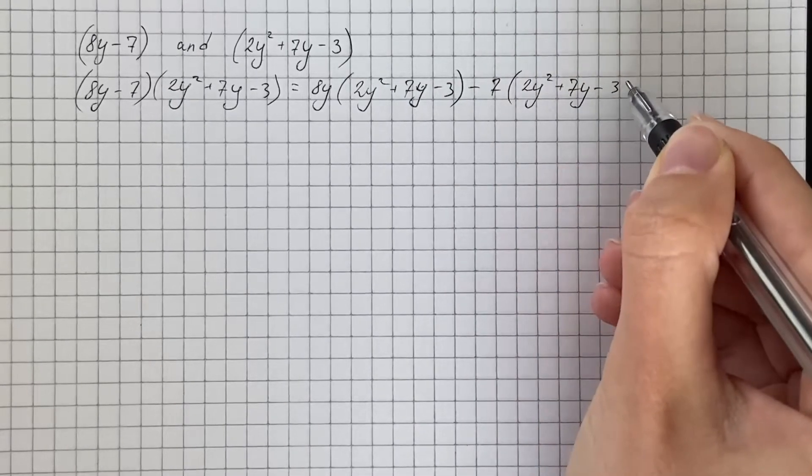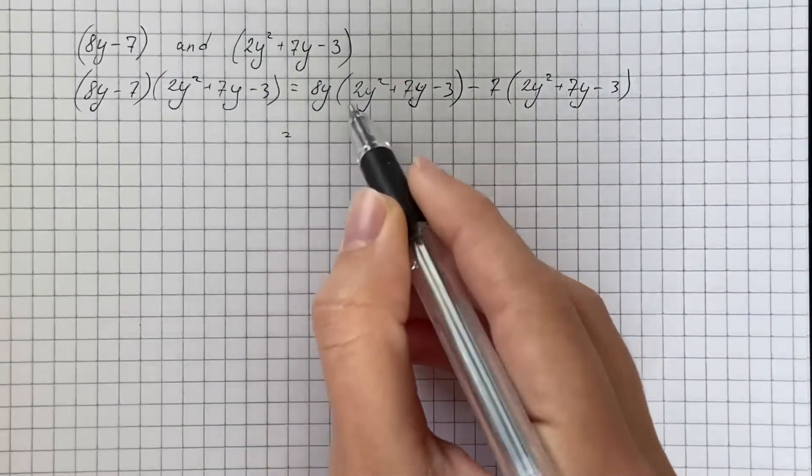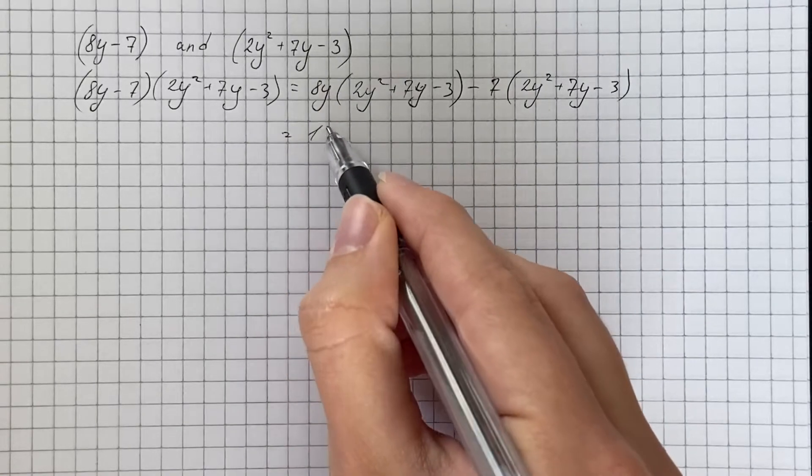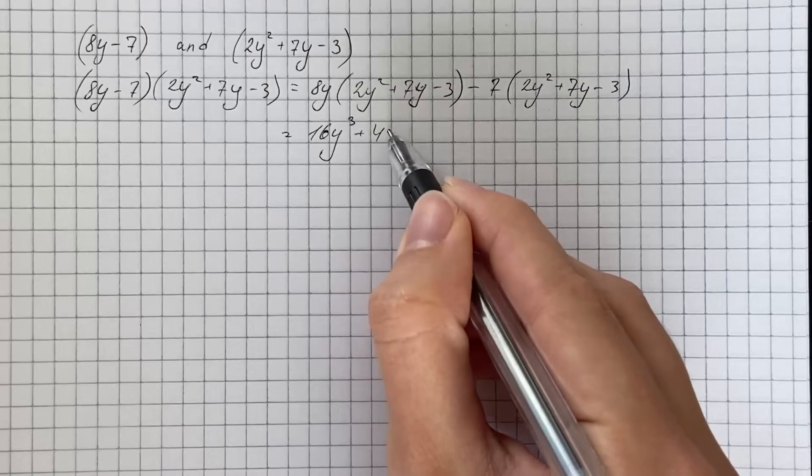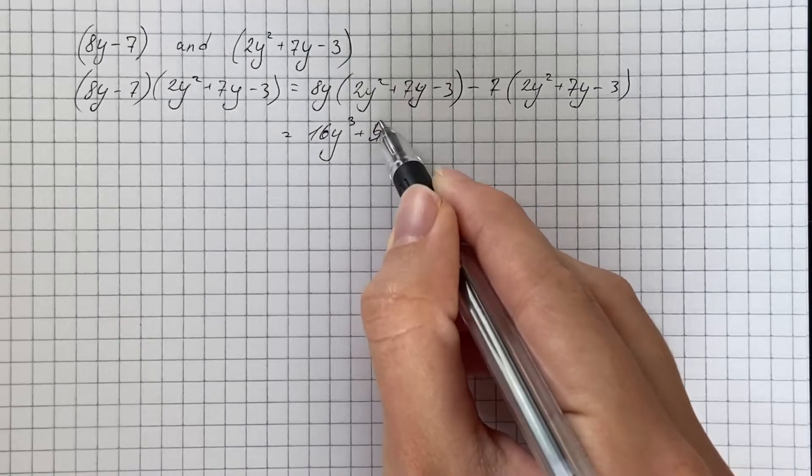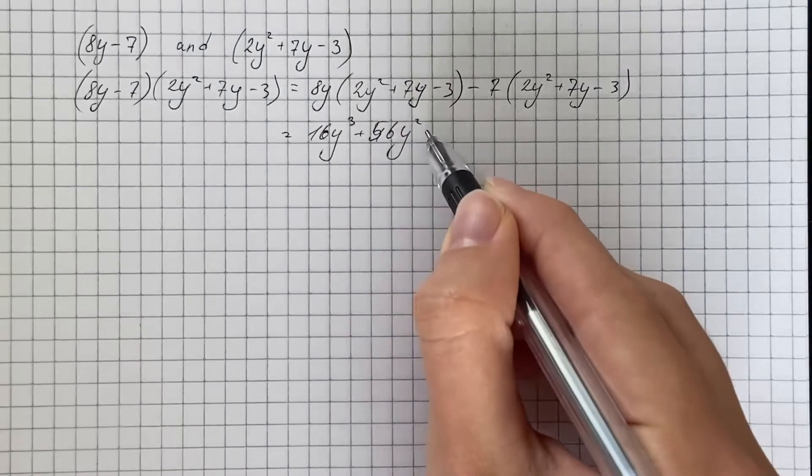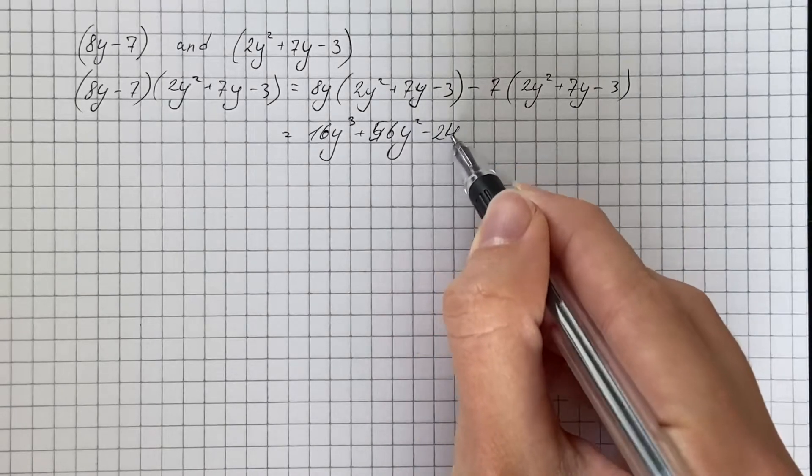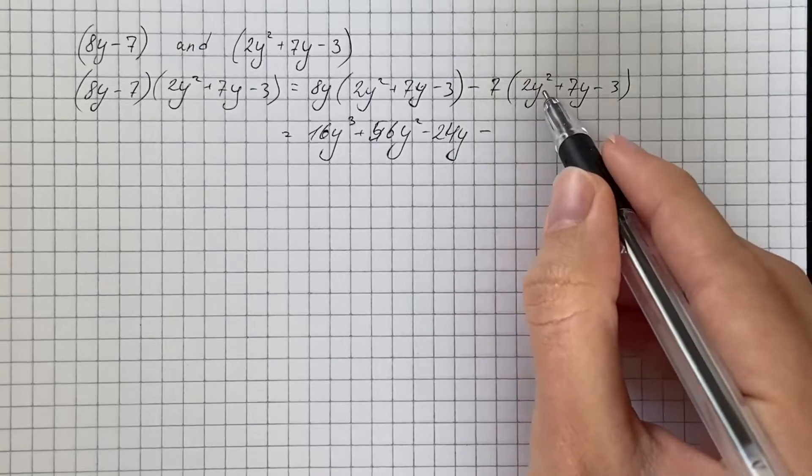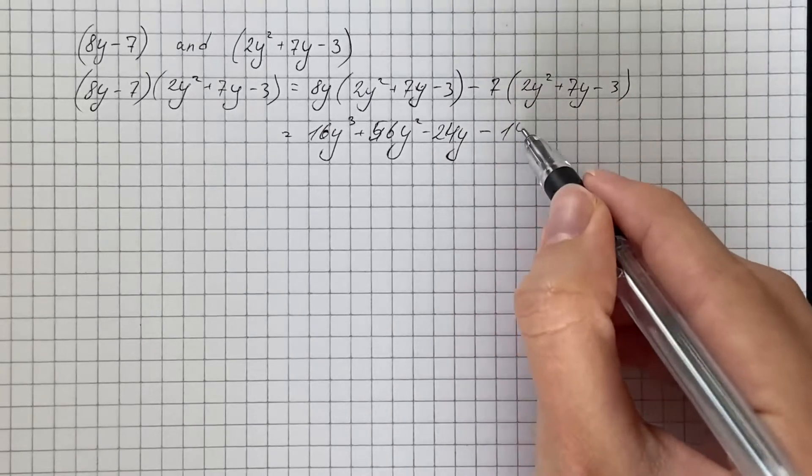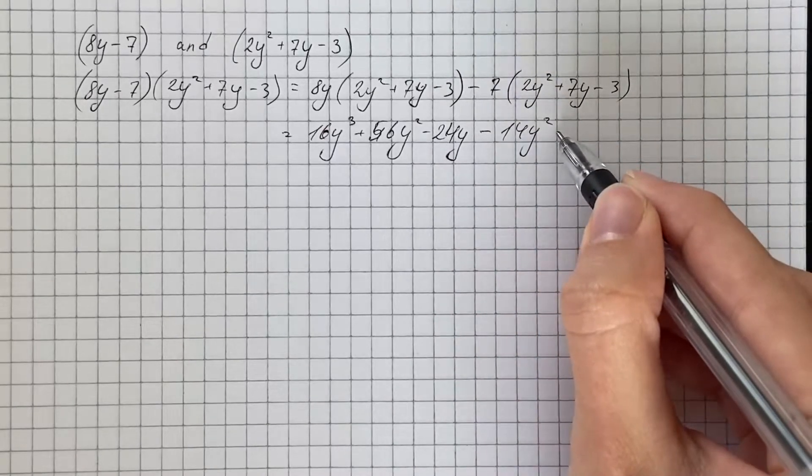So now we expand the brackets and get 16y cubed plus 56y squared minus 24y, and minus here we get 14y squared minus 49y plus 21.